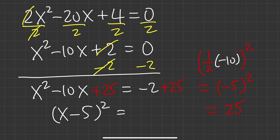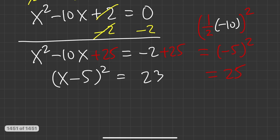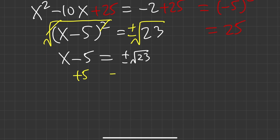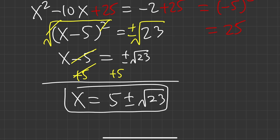On the right side, negative 2 plus 25 is 23. So x minus 5 squared equals 23. Take the square root of both sides — plus or minus. Square root of 23 can't be simplified, so x minus 5 equals plus or minus square root of 23. Add 5 to both sides: x equals 5 plus or minus square root of 23. And we are done.